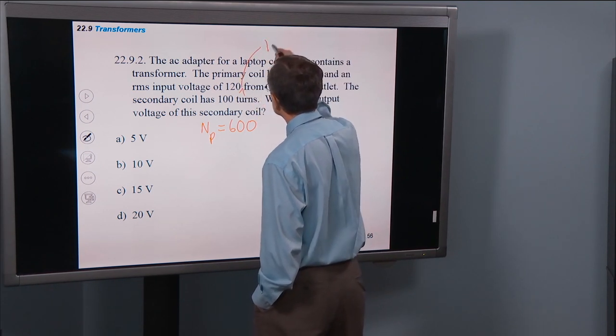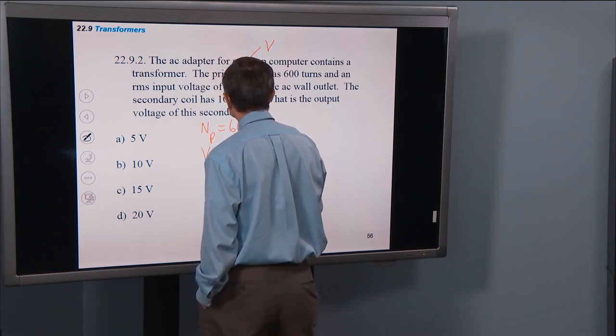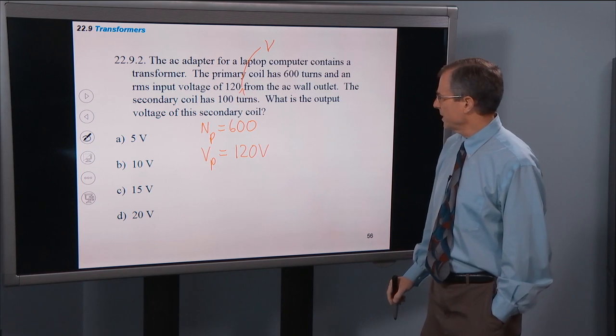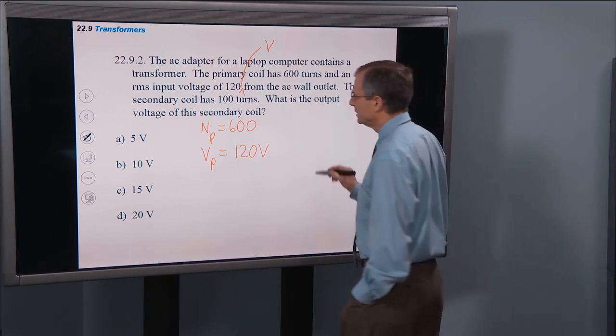So the voltage of the primary from the AC wall outlet. The secondary coil has 100 turns.